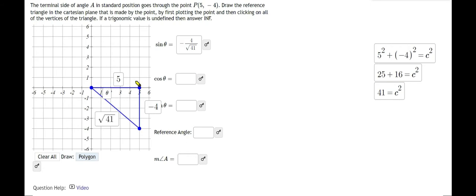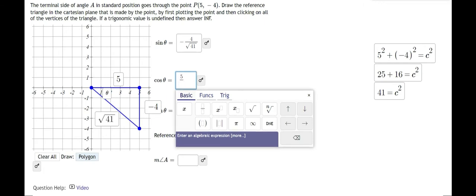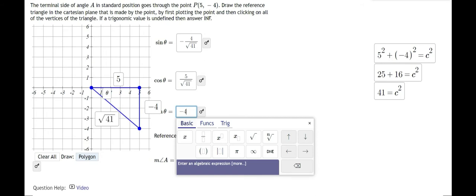Cosine is the adjacent over the hypotenuse. So the adjacent leg is positive 5. So this would be 5 over the square root of 41. Tangent here is the opposite over the adjacent. So this is going to be negative 4 over 5.